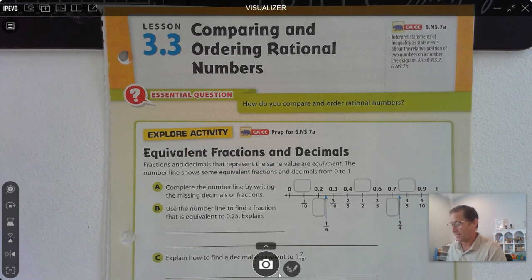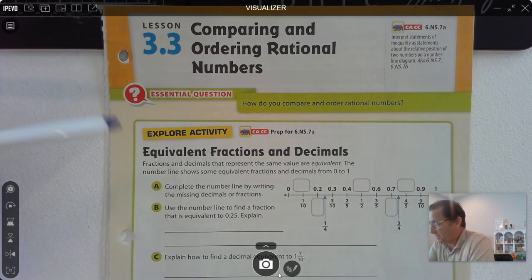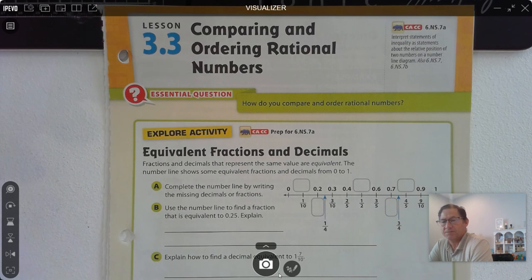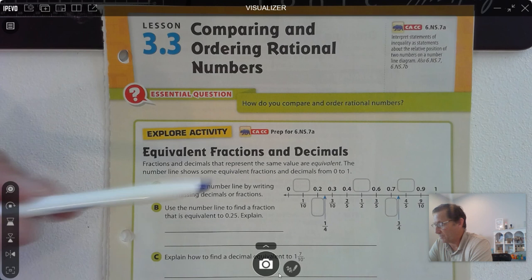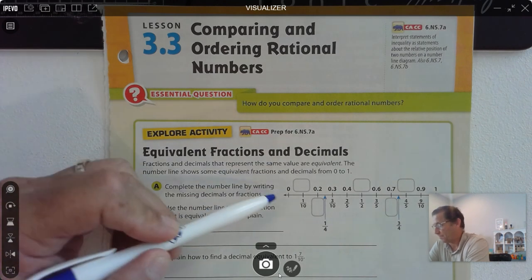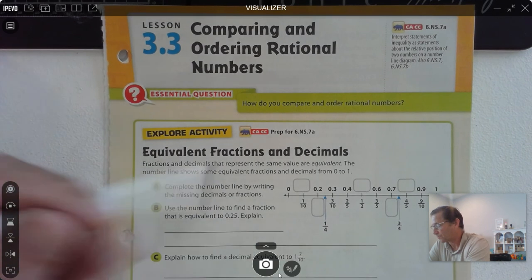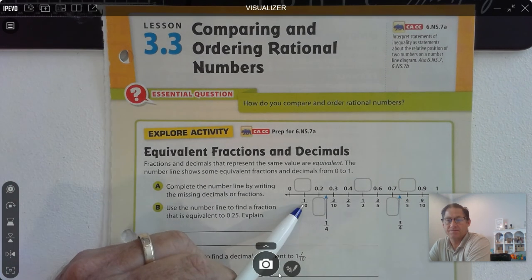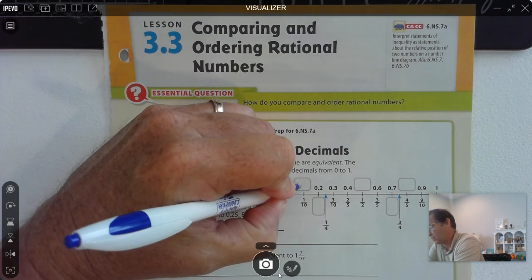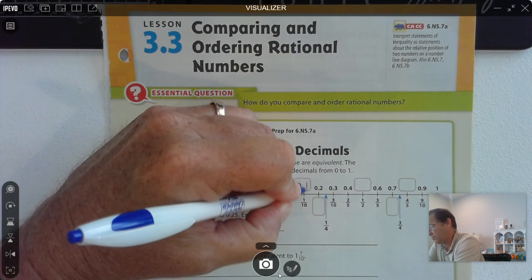So let's look at the explore activity. Fractions and decimals that represent the same value are equivalent. The number line shows some equivalent fractions and decimals from 0 to 1. All we have to do is complete the number line by writing the missing decimals or fractions. So 1 tenth as a decimal is written as 0.1.